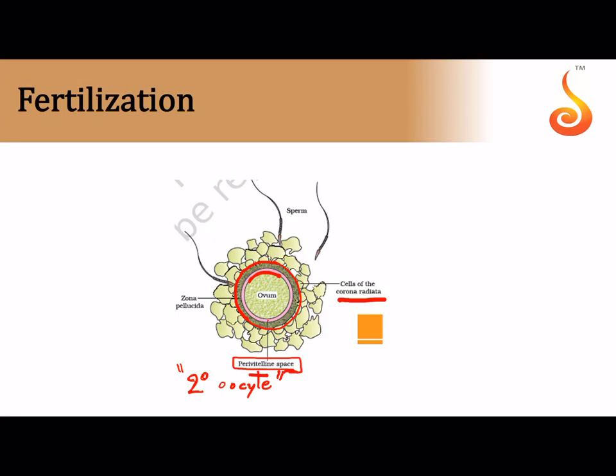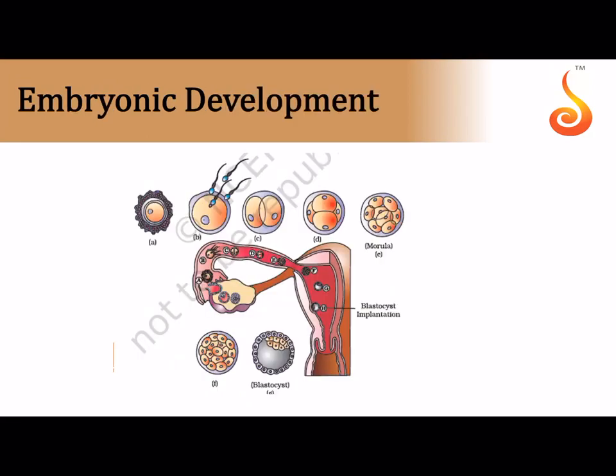The sperm must cross many barriers before entering the egg: it must cross the corona radiata and the zona pellucida. The zona pellucida is a very important barrier — the moment the sperm passes through it, the zona pellucida changes its structure and becomes impermeable to any other sperm, ensuring monospermy and blocking polyspermy.